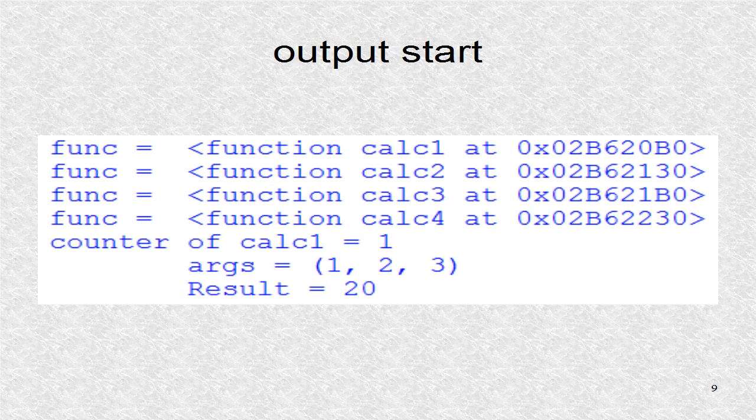The first four printouts correspond to the outer function. The rest of the printouts correspond to the inner decorator function. The counter of calc1 becomes one after the first calc1 is done.